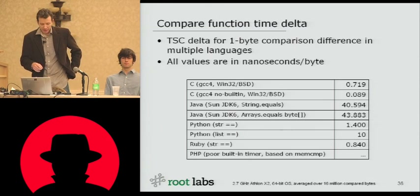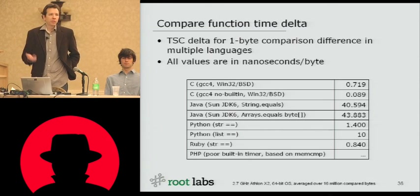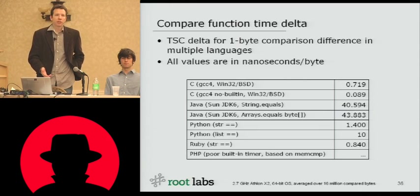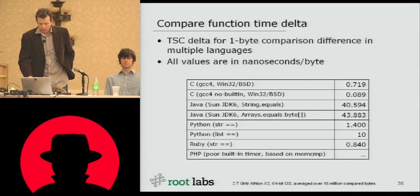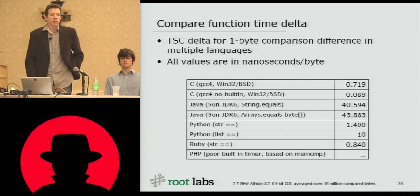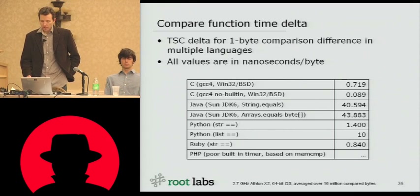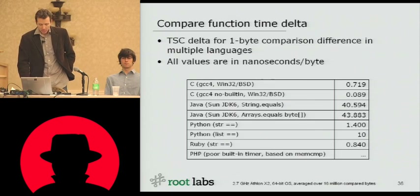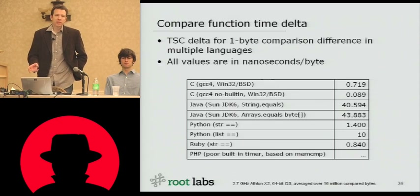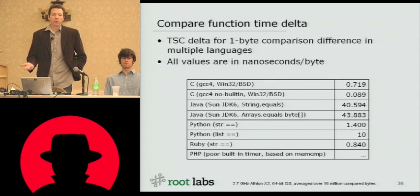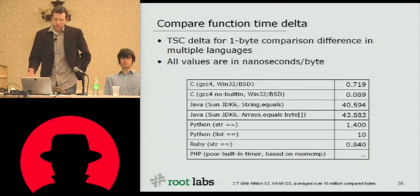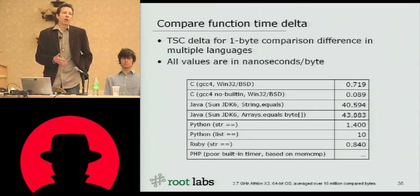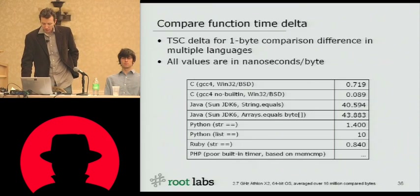For Python, we compared string equals — the most common approach — and also list equals for comparison's sake. The difference per byte for string equals was about 1.4 nanoseconds per byte, which compares favorably to the naive C implementation. List equals was about 10 times slower, so that's definitely not the way to go. For Ruby, we found it was similar to C memcmp. PHP was too difficult to analyze with the built-in timer because it only gave microsecond-level resolution, but looking at the source code we saw it used C memcmp as well. Basically, for all these languages except Java, the interpreted languages tend to devolve to a C memcmp for comparing byte arrays or strings. Java is a notable exception.